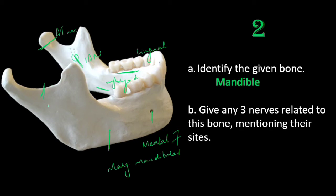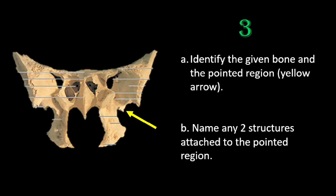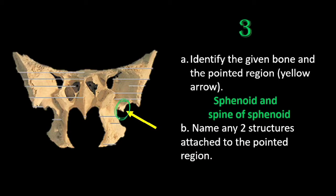Note that the question asked for the nerves with their sides, so you have to mention the sides also. The next question is: identify the given bone and the pointed region marked with the yellow arrow. The given bone is the sphenoid bone and the marked region is the spine of sphenoid. This is a frequently asked question. Name any two structures attached to the pointed region — there are basically three ligaments and two muscles attached. The two muscles attached to the spine of sphenoid are tensor tympani and tensor veli palatini.